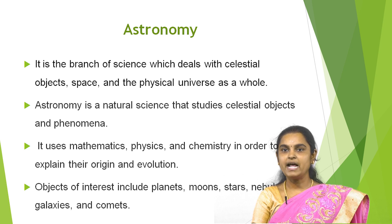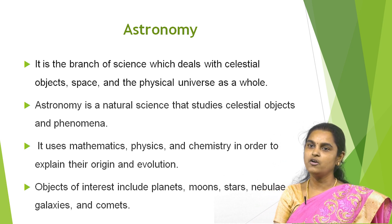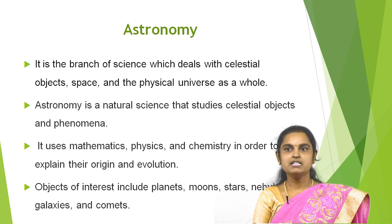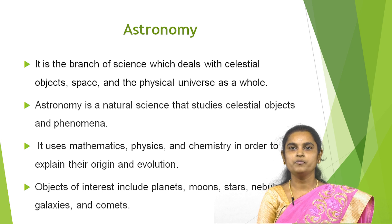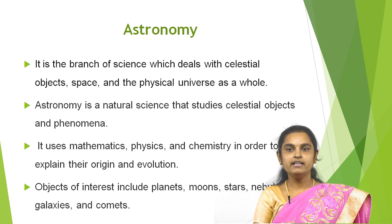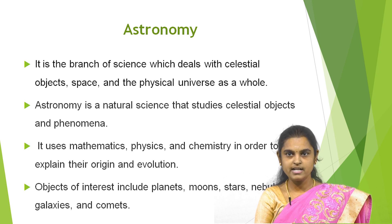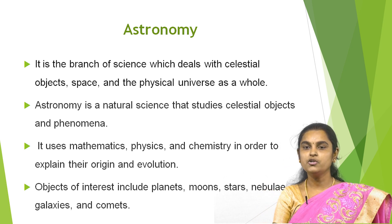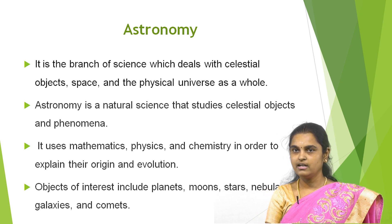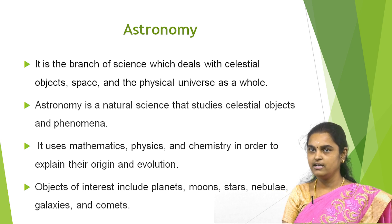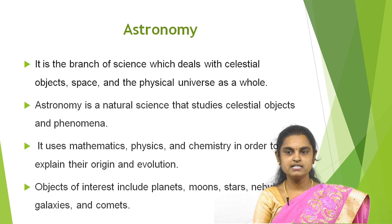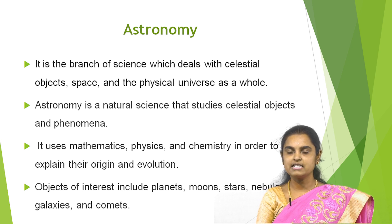Astronomy is a branch of mathematics. We know that mathematics is a queen of science. Astronomy is a branch of science which deals with celestial objects, space and the physical universe as a whole. It is a natural science that studies celestial objects and phenomena, using mathematics, physics and chemistry to explain the origin and evolution. This course is placed in 3rd B.C. Mathematics, 6th semester, and the objects of interest include planets, moons, stars, nebulae, galaxies and comets.